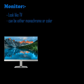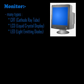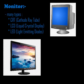First we will learn about the monitor. This is familiar to all of us — it looks like a television. Based on color, the monitor is divided into two types: monochrome monitor and color monitor. Monochrome monitor displays text and images in black and white. Color monitor displays text and images in color. There are many types of monitors available: CRT monitor, LCD monitor, and LED monitor.